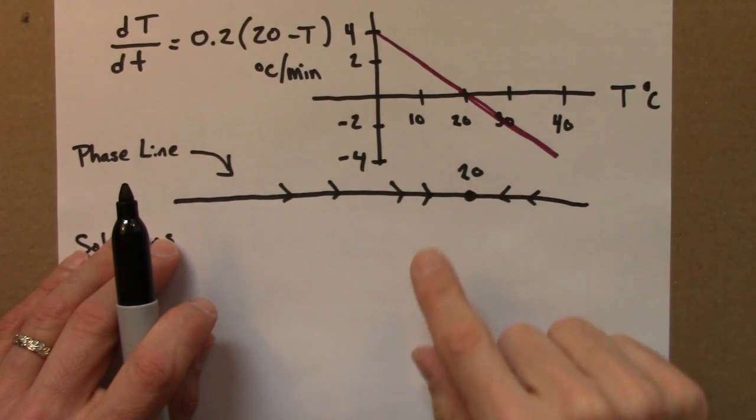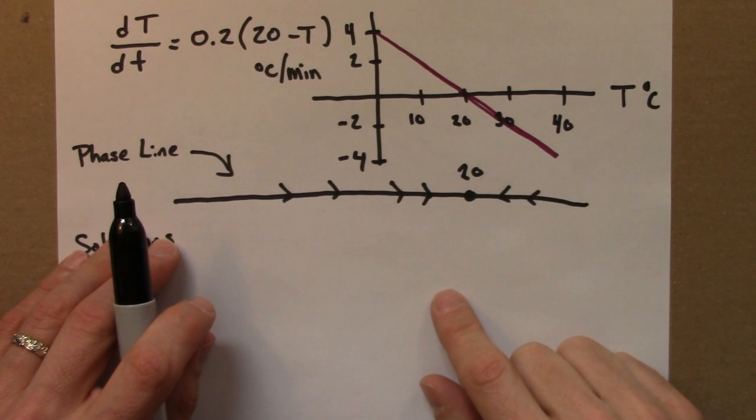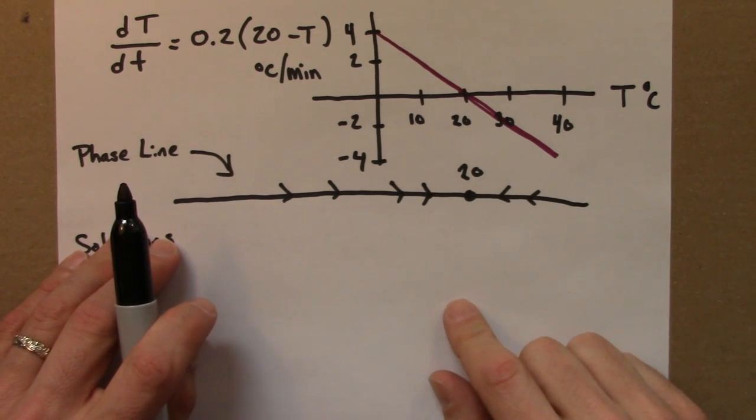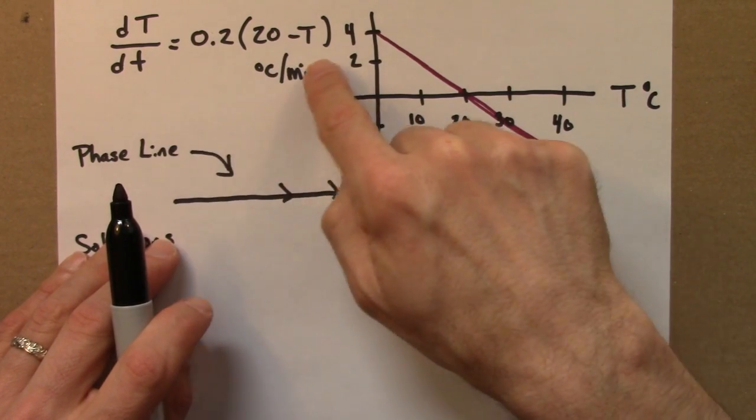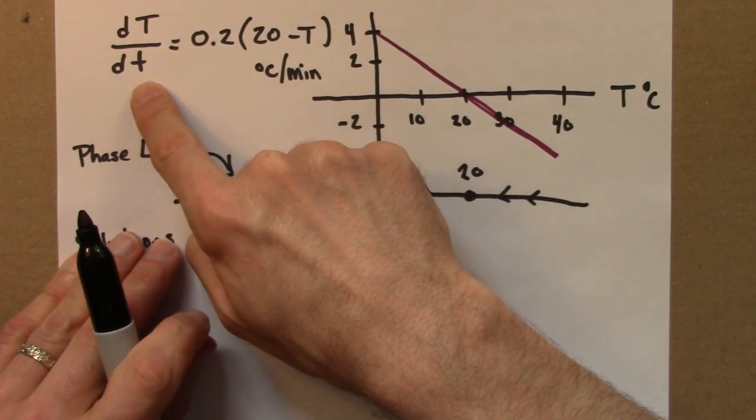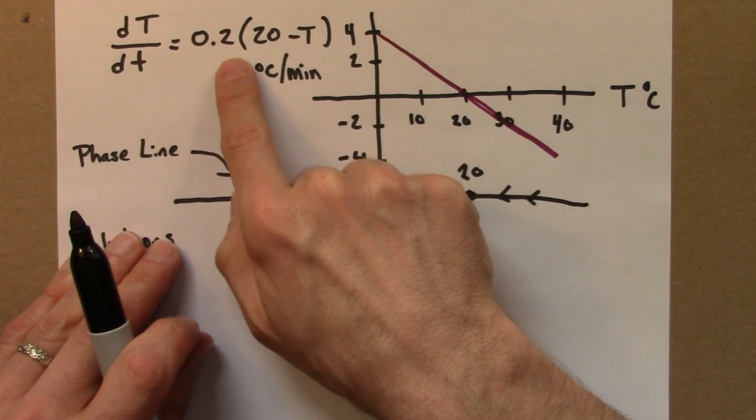Lastly, we can use these pictures to sketch the general form of solutions to this differential equation. So here's the differential equation, Newton's law of cooling, that specifies the derivative, how the temperature changes as a function of temperature.